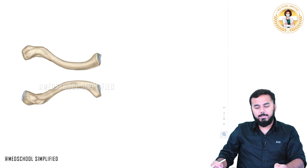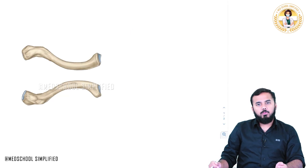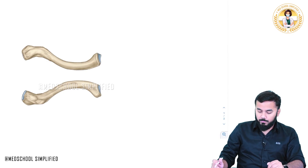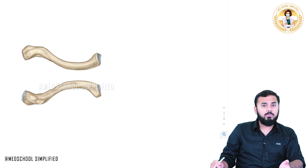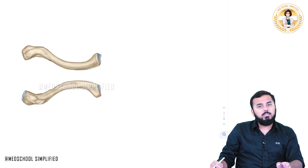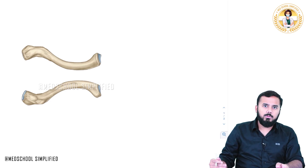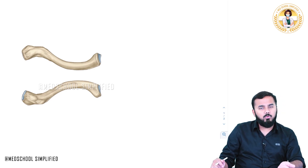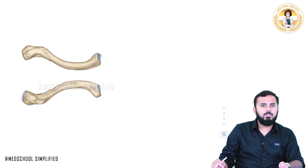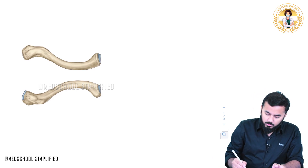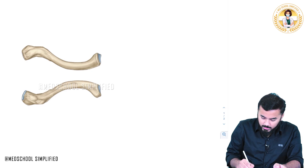Hello guys, today we shall be discussing the anatomy of the upper limb. We shall start with the clavicle. This discussion will cover all the MCQs from all the workbooks, so whatever MCQ you do from this topic will be covered. This is more than enough for your FMGE or the coming next exam. So let us discuss about the clavicle.